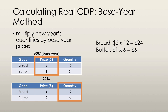For butter, we're going to take $1 per tub of butter, multiply it by 6 tubs of butter bought, and we're going to get $6. Now all we have to do is add up $24 and $6, which are the only two goods we're assuming in this economy, and we're going to get $30 — and that is real GDP.